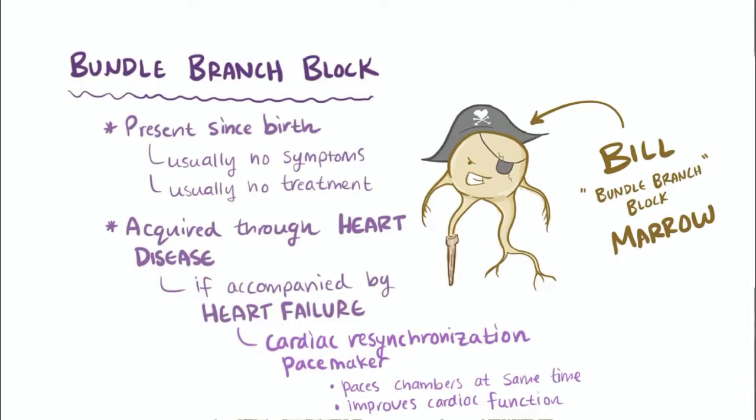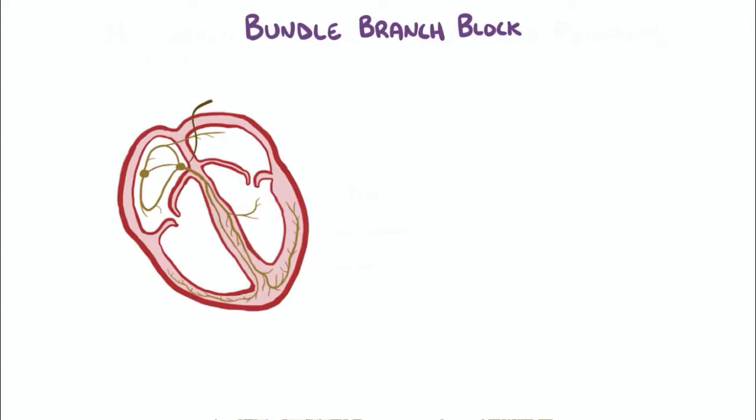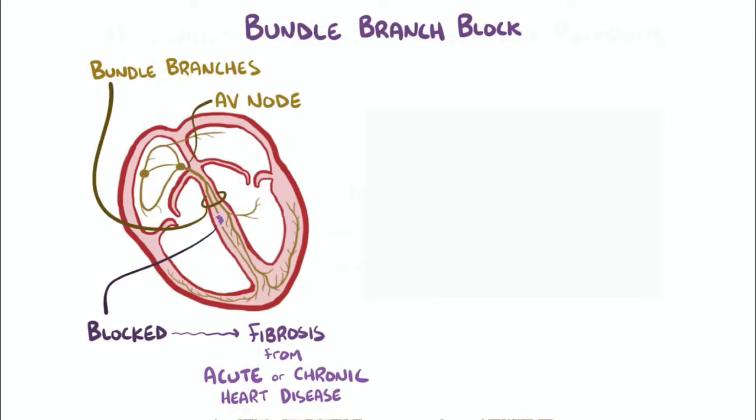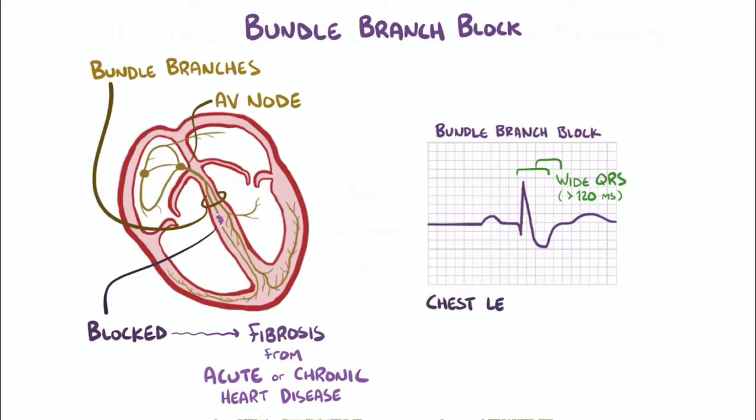As a quick recap, a bundle branch block is when the electrical signal from the AV node gets blocked or delayed along one of the bundle branches in the ventricles. It's usually caused by fibrosis of heart tissue from acute or chronic heart disease. It shows up as a wider QRS complex on an ECG, and using chest leads on the ECG can help confirm the bundle block's location.